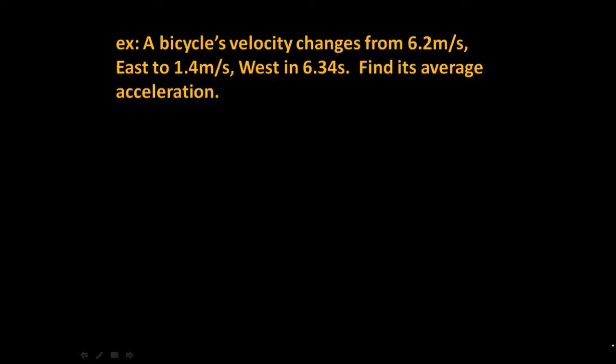So now, let's try an example of this. A bicycle's velocity changes from 6.2 meters per second east to 1.4 meters per second west in 6.34 seconds. Find its average acceleration. You've got the formula. I hope you have a calculator. Why don't you pause the video and give this a shot and then come back when you're finished or when you get stuck. Okay, you're back. That was quick.